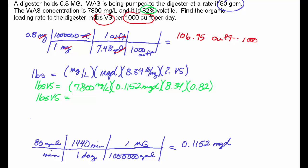How many pounds of volatiles have we got going here? I've got 7,800 times 0.1152 times 8.34 times 0.82. So I've got 6,145. So that's how many pounds of volatiles are going in there every day.